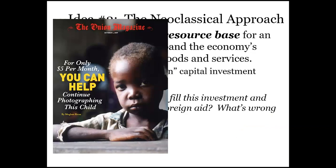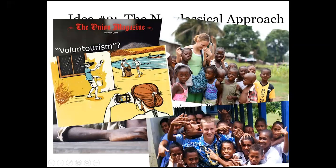This leads to what I call voluntourism. You see those TV ads — 'for only the price of a cup of coffee you can save a person in Burundi.' There's also an Onion article: 'for only five dollars a month you can help continue photographing this child.' Or maybe your friends have gone on what I call voluntourism trips — mission trips to developing countries, taking pictures with poor people and feeling fulfilled. Those warm fuzzies are real, but in reality these things won't change the systemic issues around poverty.